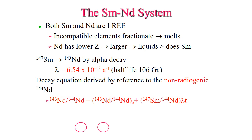The samarium-neodymium system uses two rare earth elements — both light rare earth elements that are very incompatible in the mantle — so they will fractionate into the melt instead of staying in the solid. The samarium-neodymium ratio is lower in partial melts than in the source, and also lower in late-stage crystallizing liquids. This system is more robust than the rubidium-strontium system because neodymium and samarium are non-mobile. Samarium-147 decays to neodymium-143 by alpha decay, with a half-life of approximately 106 billion years.